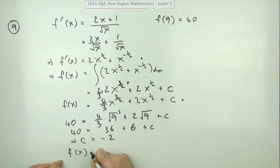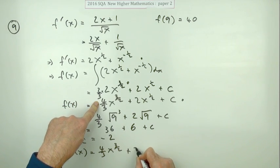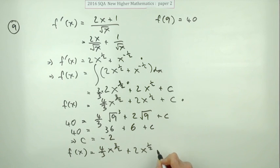So what was f(x)? It was four upon three x to the three upon two, plus two x to the power of half minus two. If you do that you get the last mark.